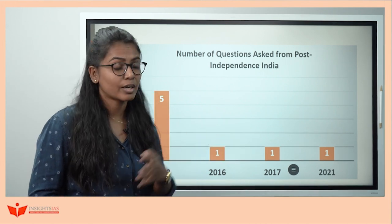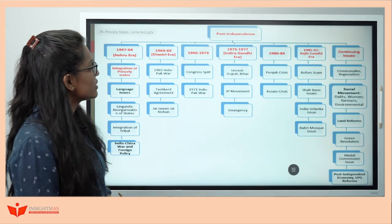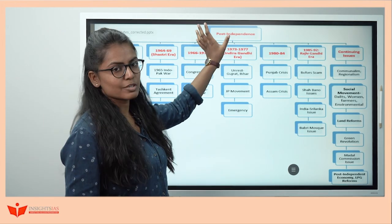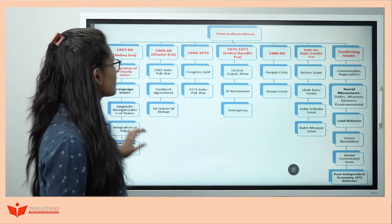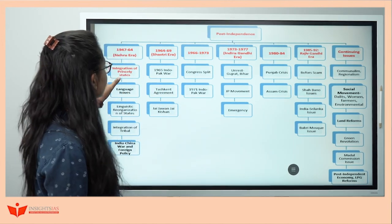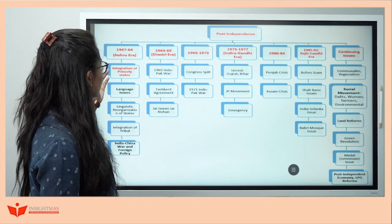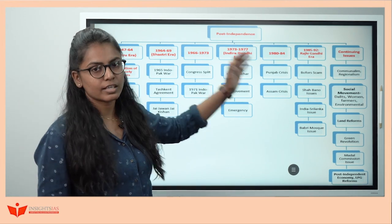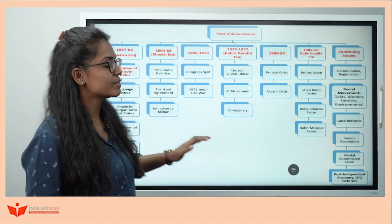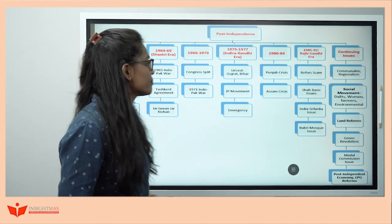From 1947 till now, we have to prepare. What we need to do is divide it into a micro-syllabus. Take the syllabus of post-independence, divide it into different eras, and inside that the major events that happened. So here: Nehru era, Shastri era, Indira Gandhi era, Rajiv Gandhi era, and then I made a heading of 'continuing issues' — things that were prevalent before and continue now.